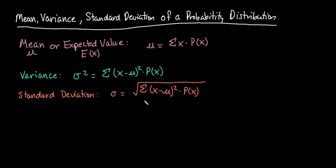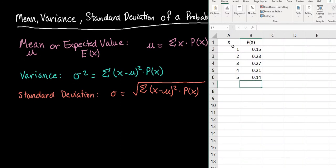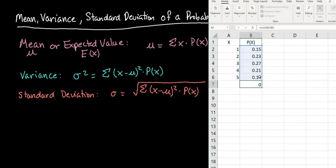So I have a problem in Excel. My possible values of X are 1, 2, 3, 4, 5, and my probabilities are 0.15, 0.23, 0.27, 0.21, 0.14. Since this is a probability distribution, remember all of your values have to be between 0 and 1, which they are, and the sum of your probabilities has to equal 1. If I find the sum of this list and hit enter I can see that equals 1, so we verify that this is a probability distribution.